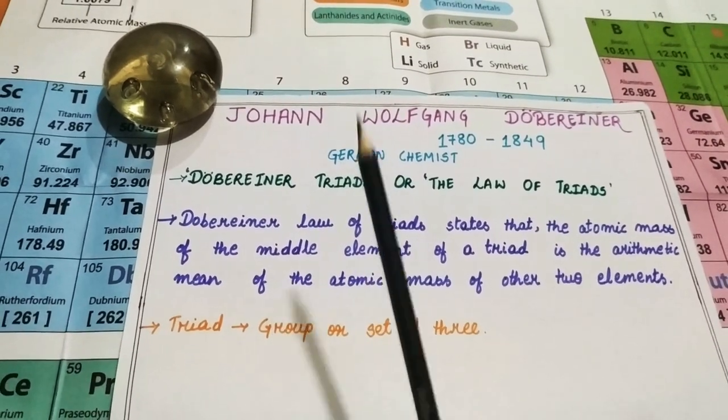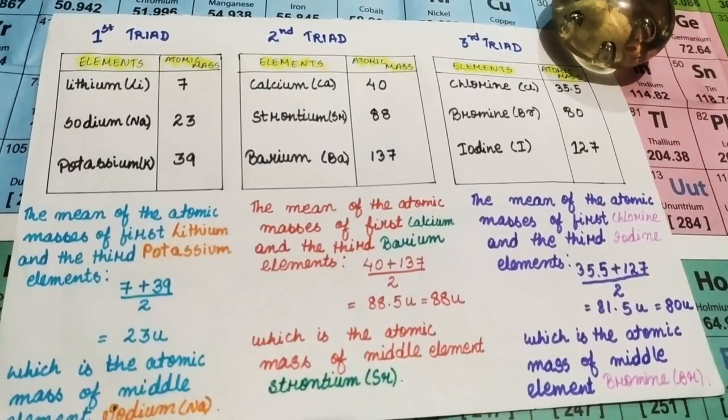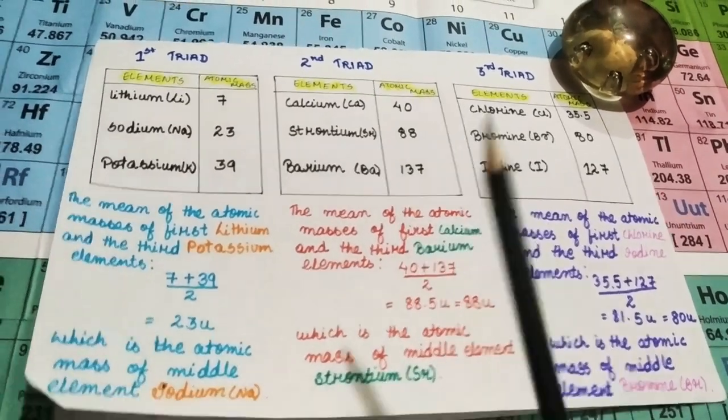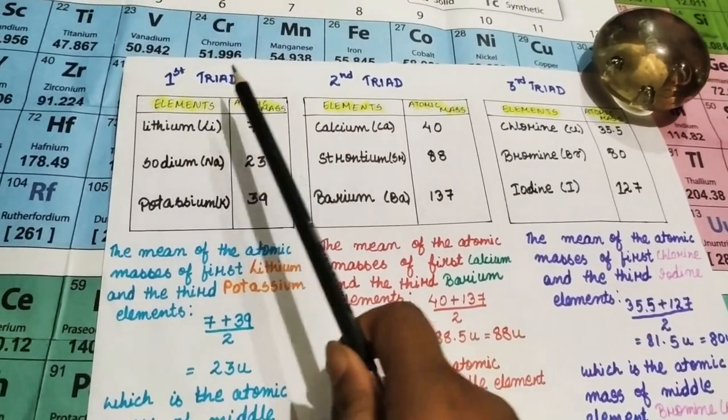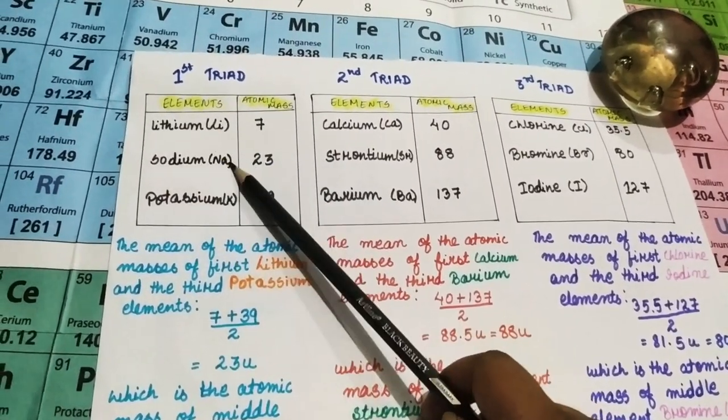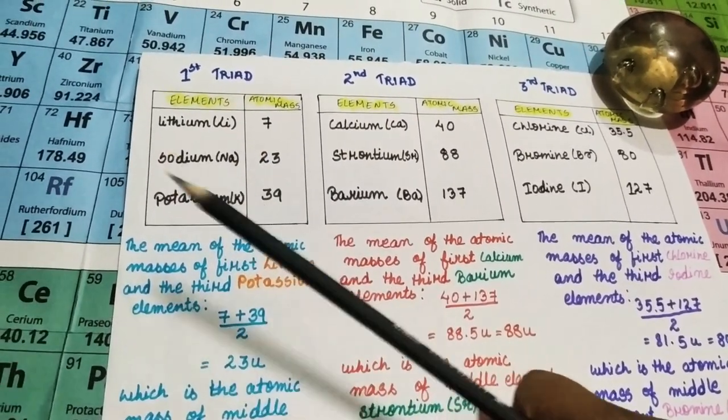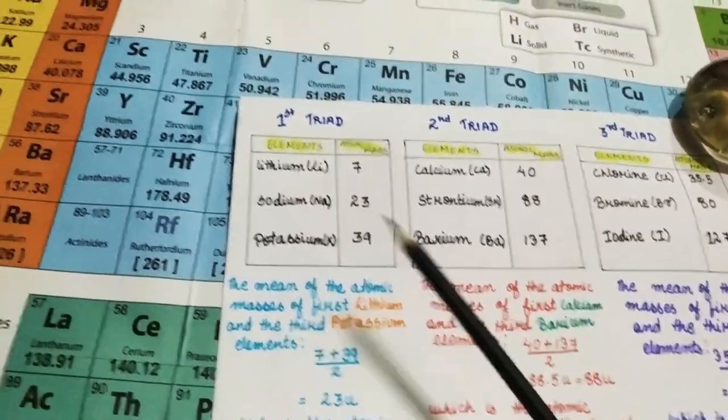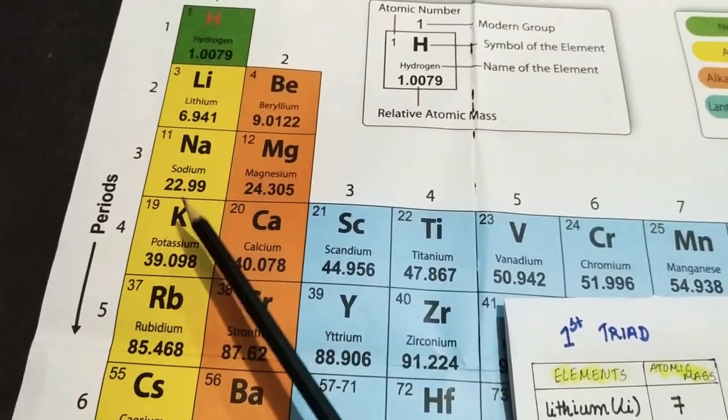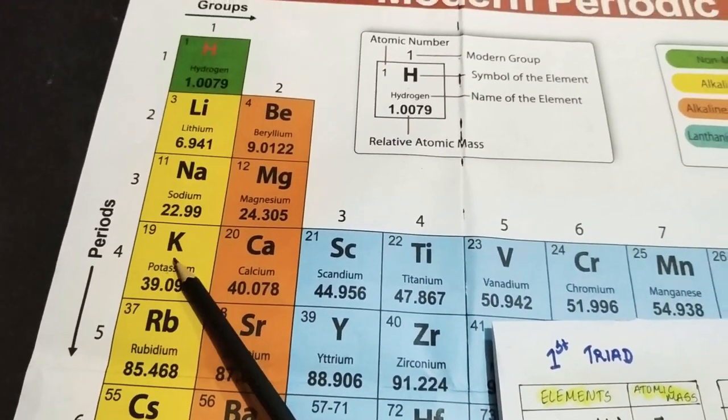Now let us understand his statement. These are the three triads that he gave and let us just check it out. The first triad includes elements lithium, sodium, potassium. Let us check it out where it is in the modern periodic table: lithium, sodium, potassium in the alkali metals.